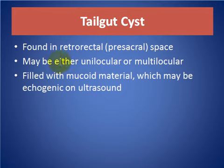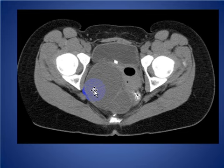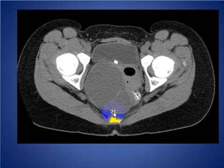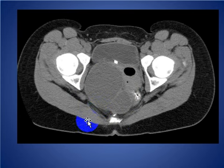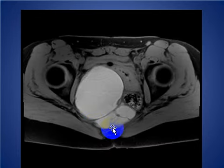Tailgut cyst: found in the retrorectal or presacral space, may be either unilocular or multilocular. It is a cystic mass lesion filled with mucoid material, which may be echogenic on ultrasound. Here we see a multilocular cystic mass lesion in the sacral region pushing the rectum and bladder; the differential includes duplication cyst but the operative finding was tailgut cyst. MRI of the same patient confirms a non-enhancing cystic mass with multiple septations.